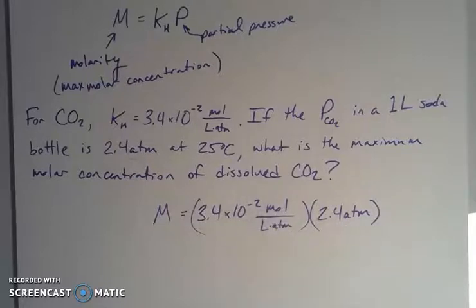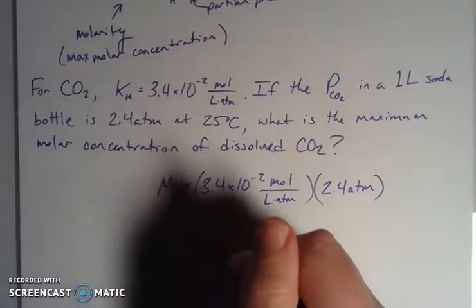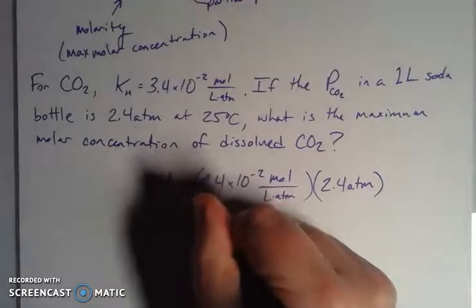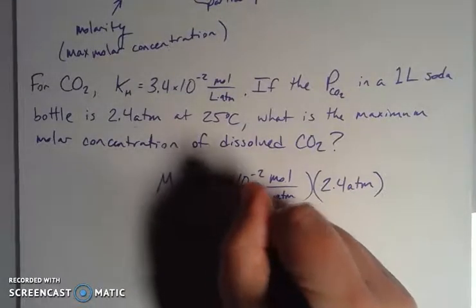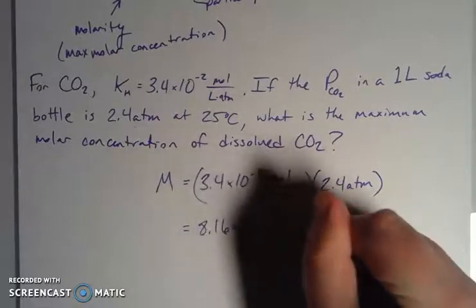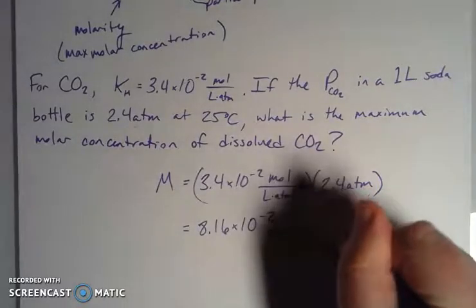And then if I'm analyzing my units, my atmospheres will divide out, which will give me moles per liter. So that'll give me that maximum molar concentration or molarity as we're thinking about it. So that concentration at its maximum limit at saturation point. And I end up with 8.16 times 10 to the negative 2 moles of CO2 per one liter.